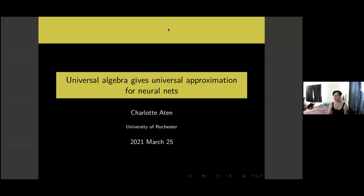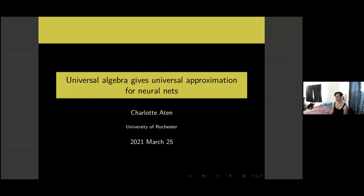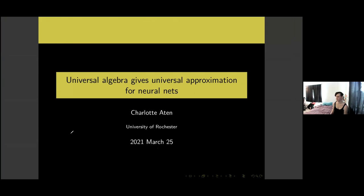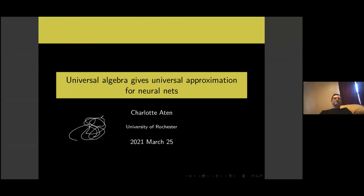Thank you so much for having me here virtually at the Rochester Combinatorics Seminar. I am going to go ahead and share my screen so that we can see my slides. I have the usual diagnostic stuff to do first. Can everyone see this slide that says 'universal algebraic gives universal approximation for neural nets'? Yes? Okay, fantastic. Can you see this white scribble here? Yes? Perfect. Then we are up and running.